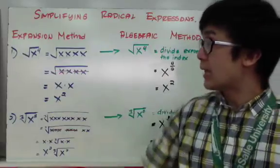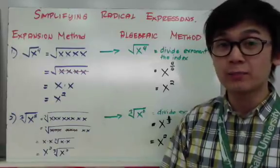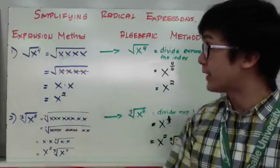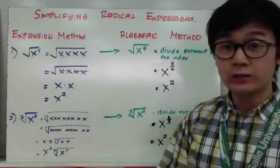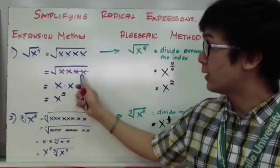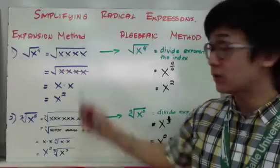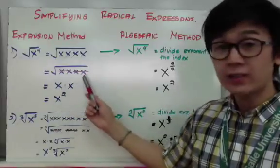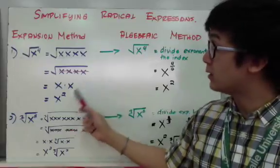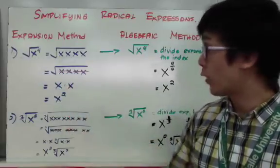In example one, I have square root of x to the fourth, which means I have four x's inside my radical. I expanded it, and since I have a square root, I need pairs of x's to simplify. I have two pairs of x's, so with nothing left over inside the radical, my square root of x to the fourth is simply x squared.